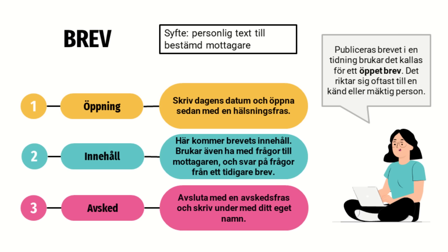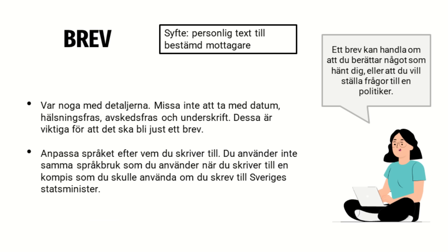Vissa brev är så kallade öppna brev, som är tillgängliga för andra att läsa även om de är för en specifik mottagare. De brukar publiceras på sociala medier eller i tidningar och riktas till någon känd eller mäktig person – till exempel ett brev till statsministern som man vill att andra också ska se. Var noggrann med detaljerna: missa inte datum, hälsningsfras, avskedsfras och underskrift. Anpassa också språket beroende på vem du skriver till – du har inte samma språkbruk om du skriver till din bästa kompis som om du skriver till Sveriges statsminister.